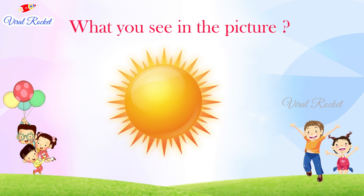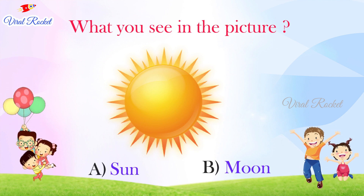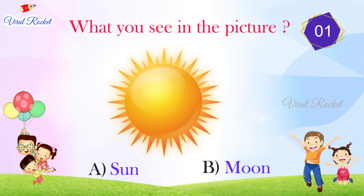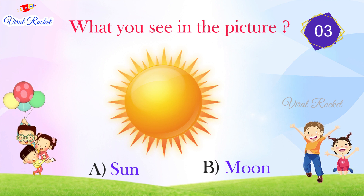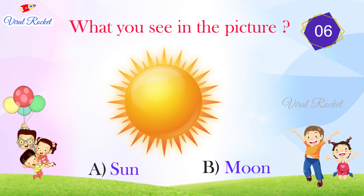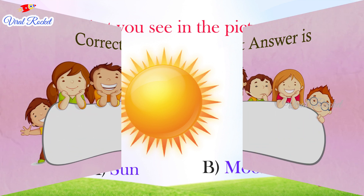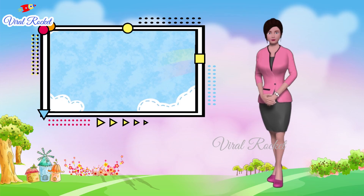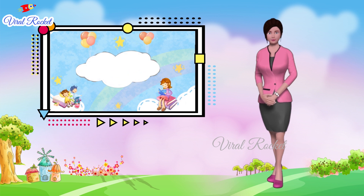What do you see in this picture? The options are: A. Sun, B. Moon. The correct answer is B. Sun. You answered all the questions! We will meet in the next episode with a new set of questions. Please leave your comments below. Bye!